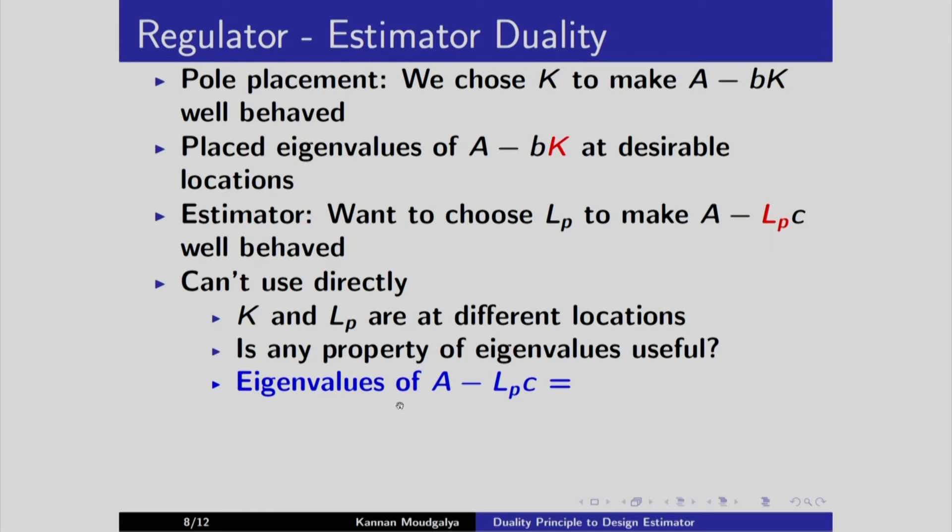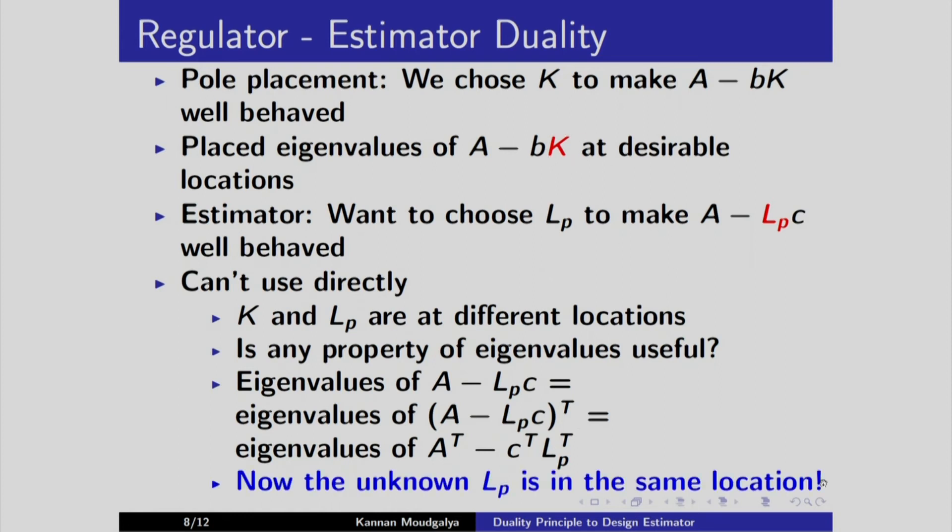Let us recall the well known formula. Eigenvalues of A minus Lpc equals. I want to bring this Lp to this side. If it is to the right of C, then it will be in the same location on the right extreme. How do I do that? What property of eigenvalue should I use? I should take the transpose. This is equal to the eigenvalues of A minus Lpc transpose. And this is nothing but eigenvalues of, let us take transpose A t minus C t Lp t. Here is the unknown. It has come to the right extreme, just as we have here.